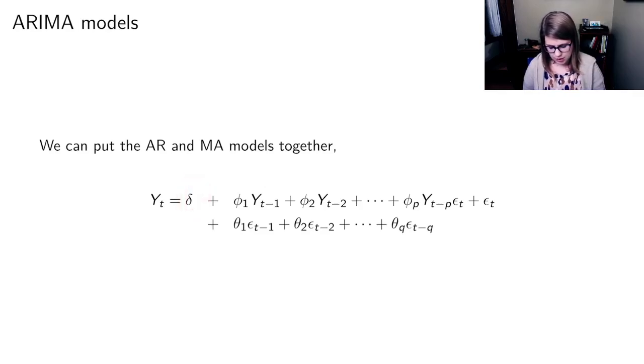So we've got a constant, we've got terms that depend on the previous step in the data, we've got terms that depend on the previous error, we've got some error overall, and we're just going to put it all in one big model.